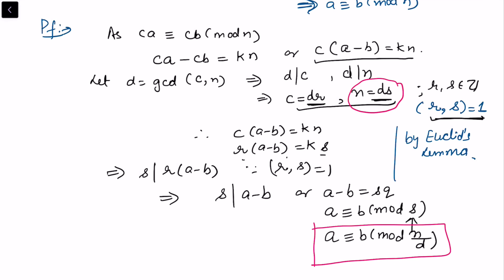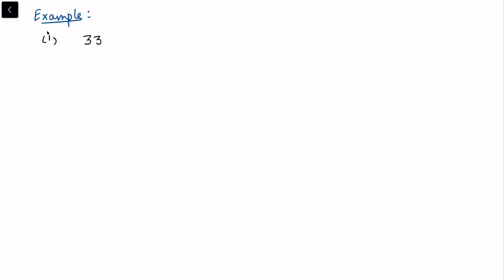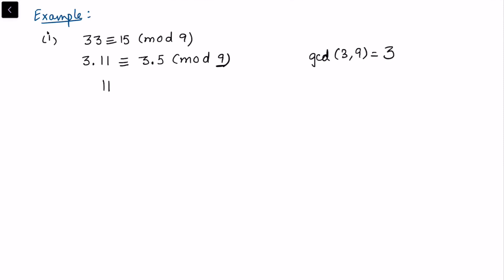Let's look at the first example: 33 is congruent to 15 modulo 9. We can write 33 as 3 times 11 and 15 as 3 times 5, modulo 9. If we want to cancel the 3, we notice that gcd(3, 9) = 3. So this becomes 11 is congruent to 5 modulo 3, and the modulus also changes accordingly.